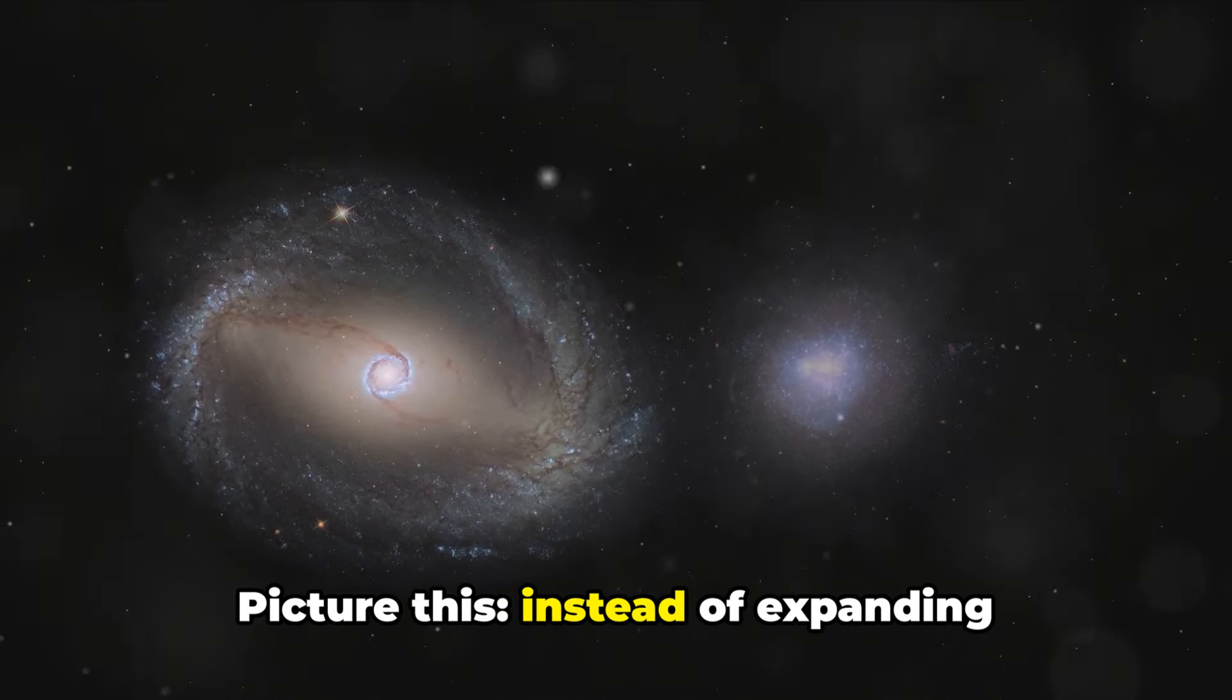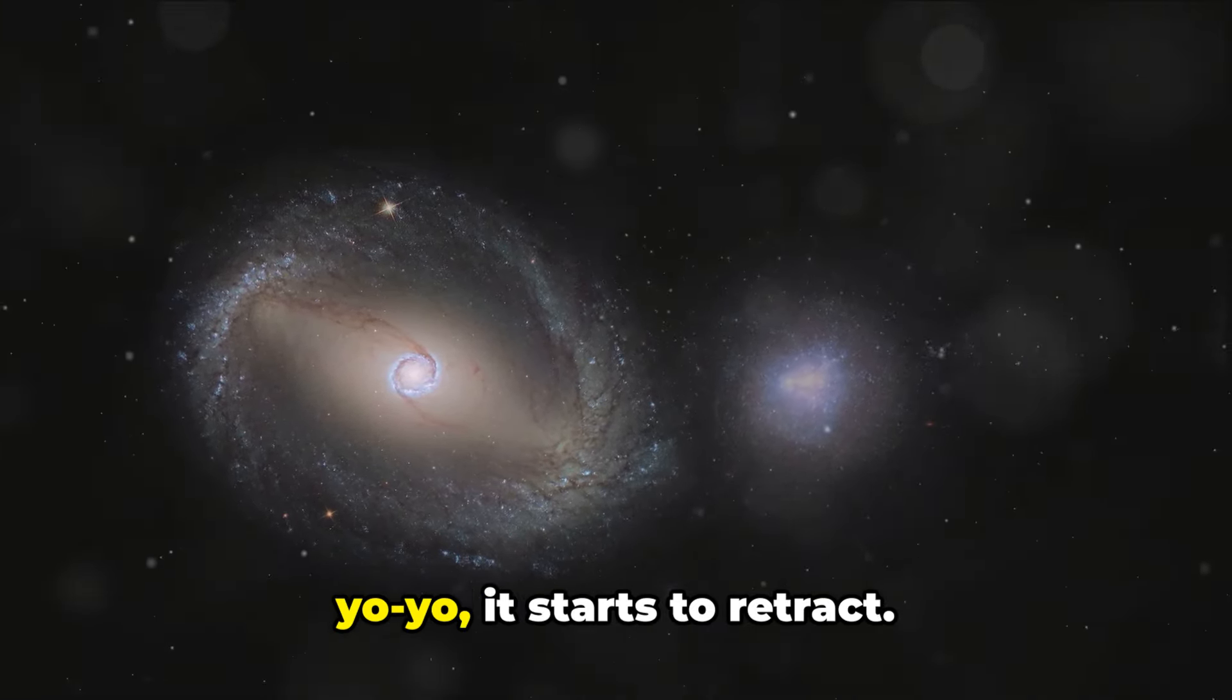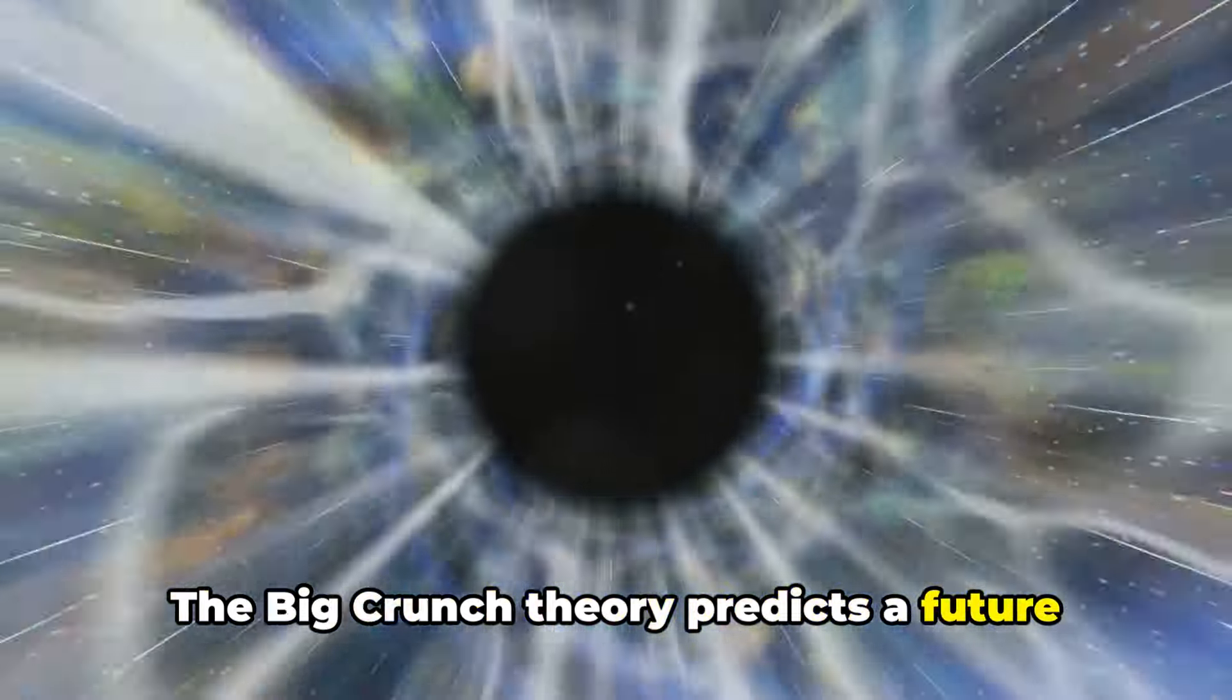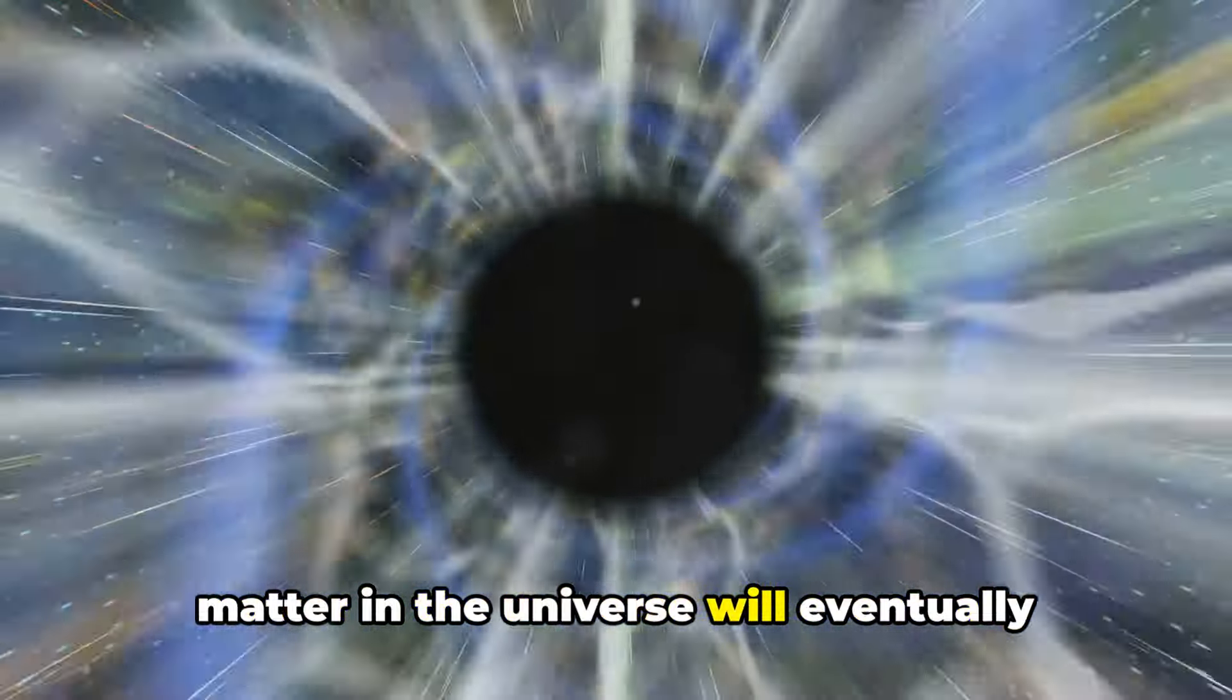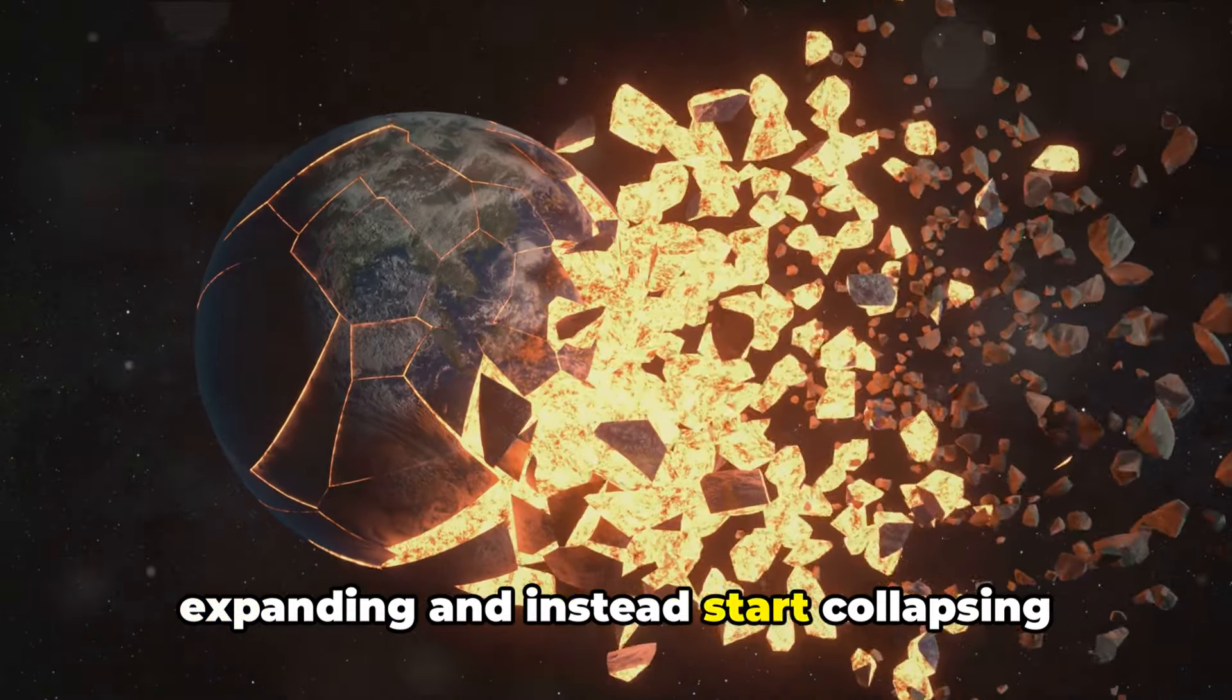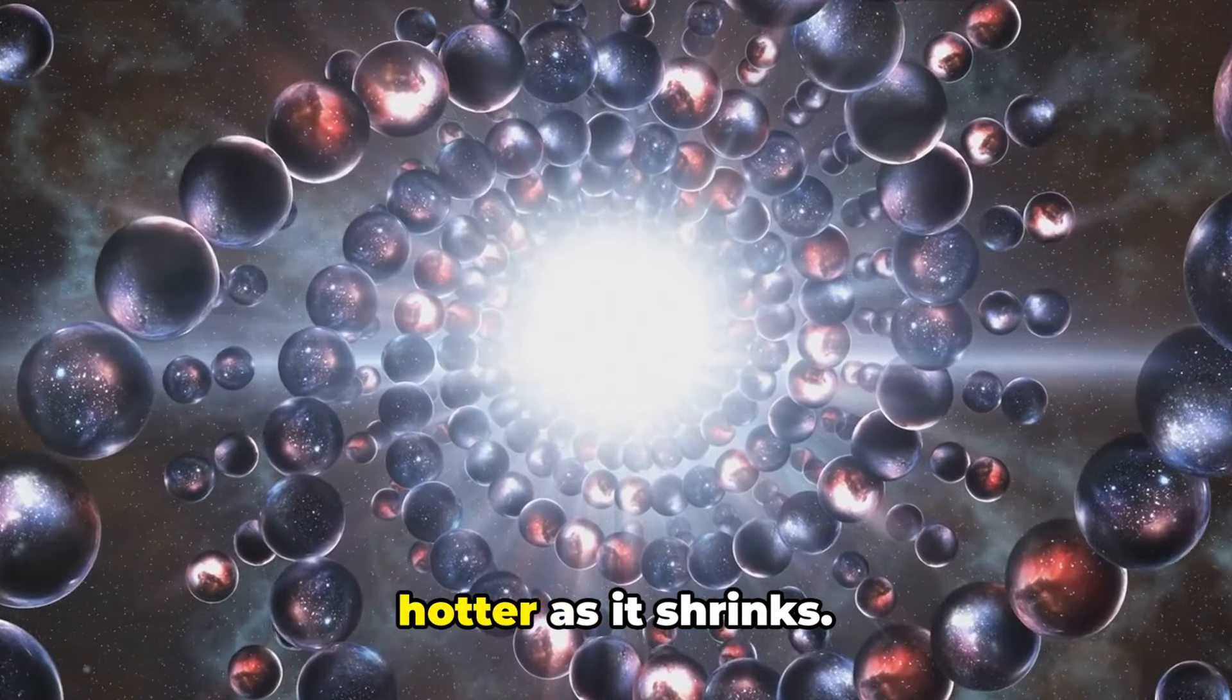Picture this. Instead of expanding indefinitely, the universe suddenly halts its outward journey, and like a cosmic yo-yo, it starts to retract. This is the essence of the big crunch theory. The big crunch theory predicts a future where the gravitational pull of all the matter in the universe will eventually overpower the current expansion. This would cause the universe to stop expanding and instead start collapsing back in on itself. It's a bit like rewinding the Big Bang, with the universe getting denser and hotter as it shrinks.